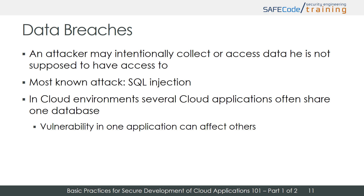Data breaches occur when an attacker is capable of collecting data they are not supposed to have access to. One of the most well-known attacks is SQL injection, which allows an attacker to manipulate SQL queries to extract any data from the database underlying an application. SQL injections are already dangerous against web applications, but inside a multi-tenant cloud environment it is even worse — when several cloud applications share a single database, a vulnerability in a single application may potentially expose the data of all applications to an attacker. So even if your cloud application is secure, your data can be leaked because of a vulnerability in another application on the same cloud provider, for instance in a SaaS context.